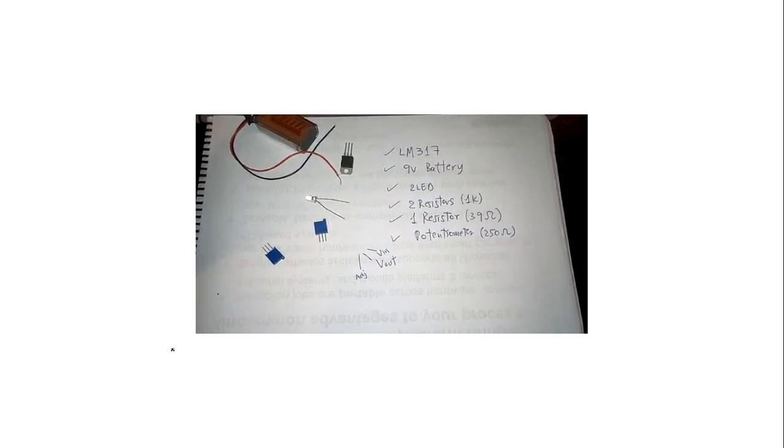You can use precision potentiometers for the two resistors you need - for the 1k and for the 39 - and for the potentiometer of 250 ohms. You can use this. I recommend you to use precision potentiometers for every resistor we need.